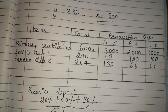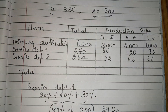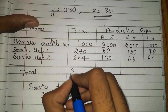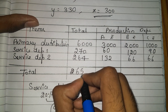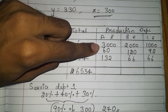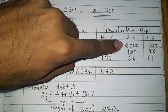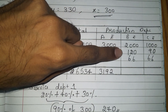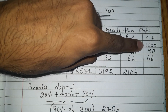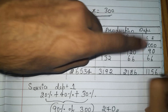Adding all distributions: Total = 6000 + 270 + 264 = 6534. A = 3000 + 60 + 132 = 3192. B = 2000 + 120 + 66 = 2186. C = 1000 + 90 + 66 = 1156. This completes the simultaneous equations method.